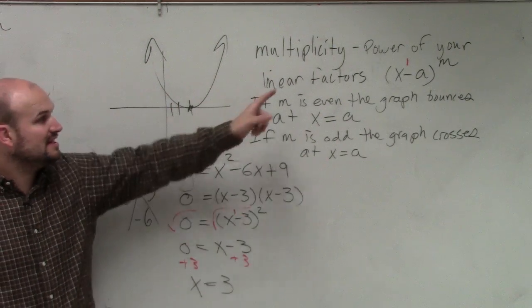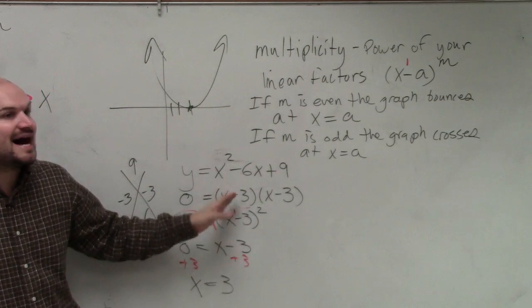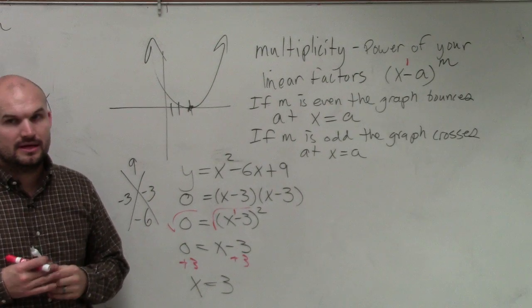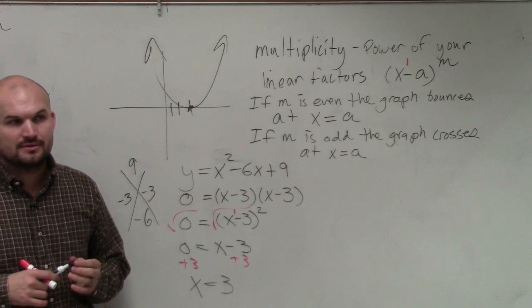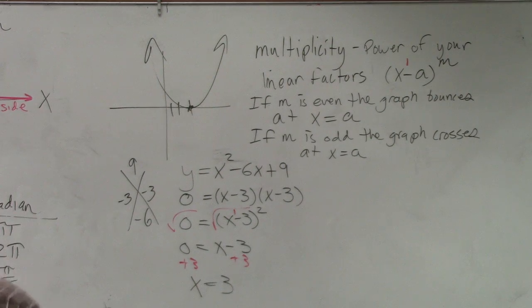If it has a multiplicity that's even, that tells you the graph bounces. If you have a multiplicity that's odd, that tells you the graph crosses. Any questions? All I'm going to ask you guys to do at this point in time is just find the zeros.